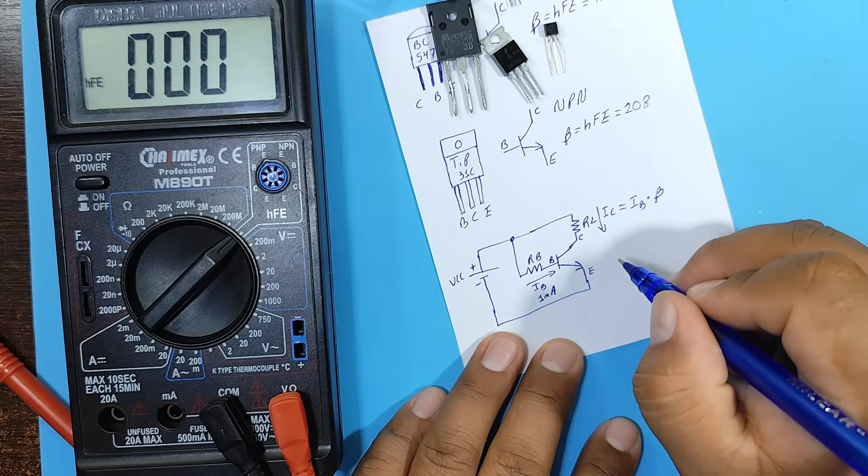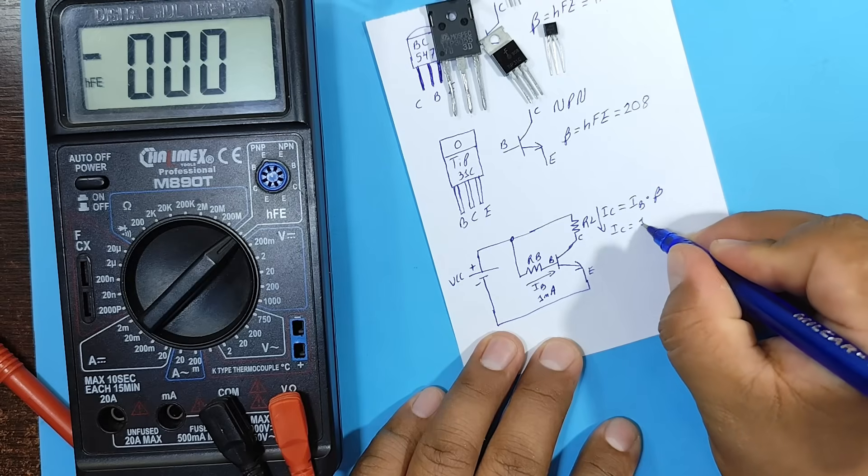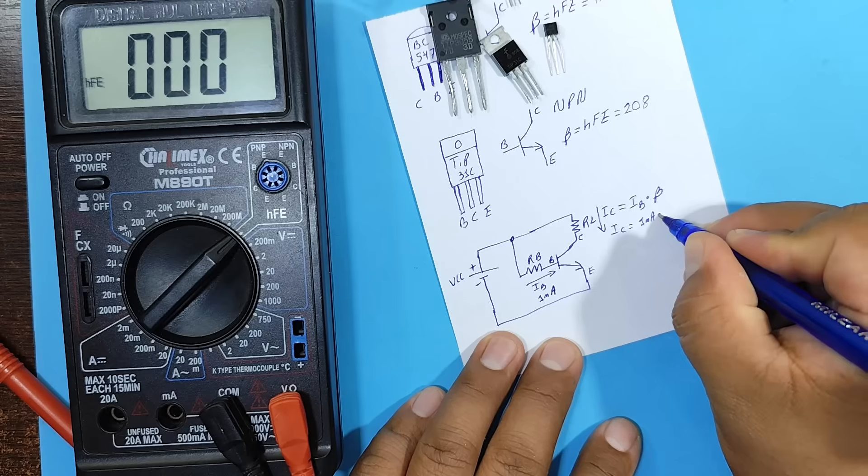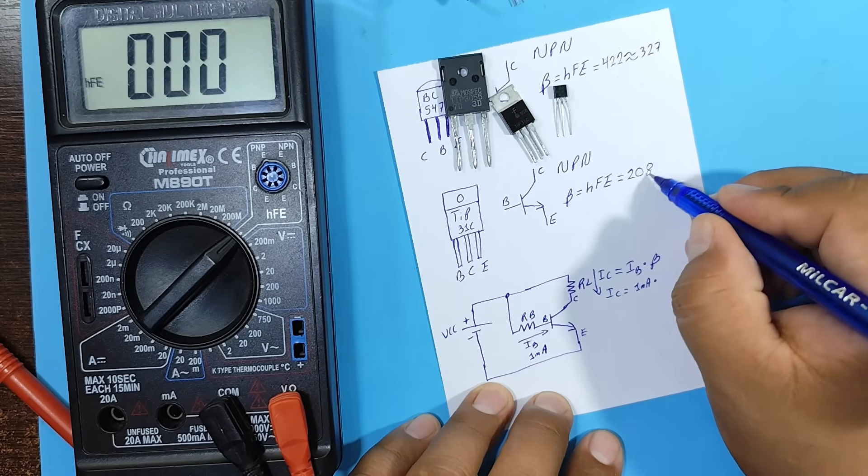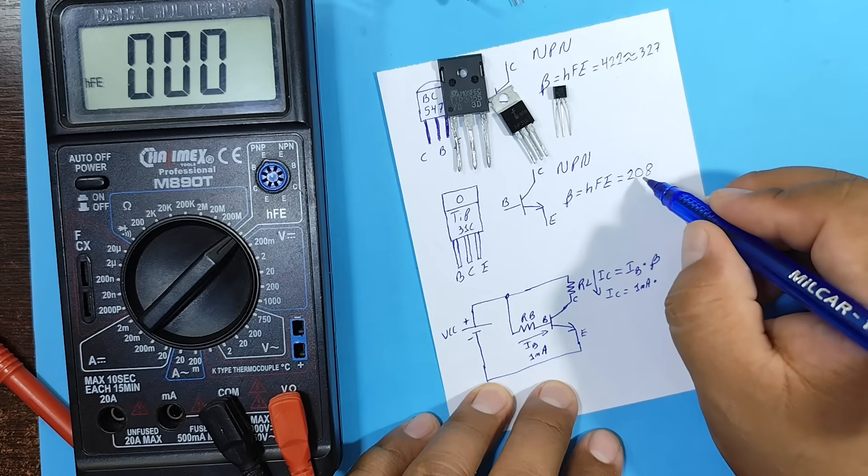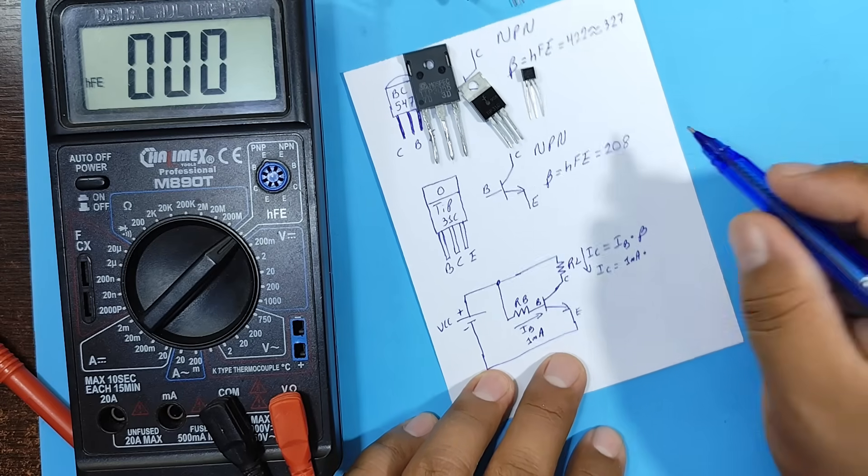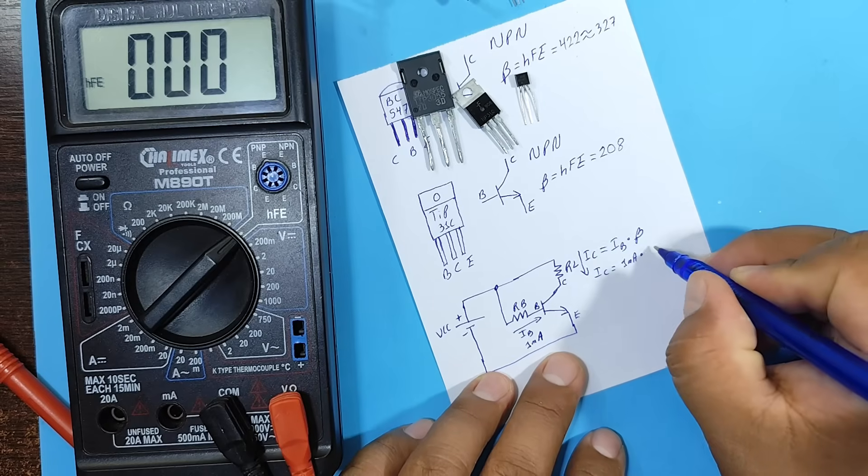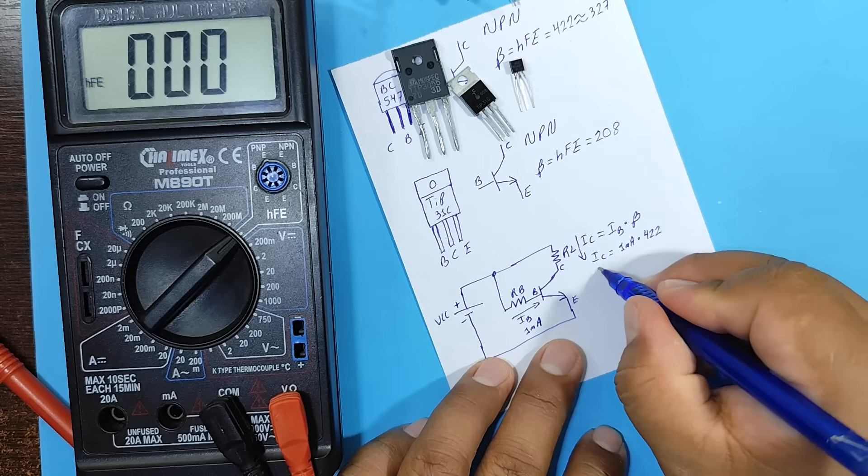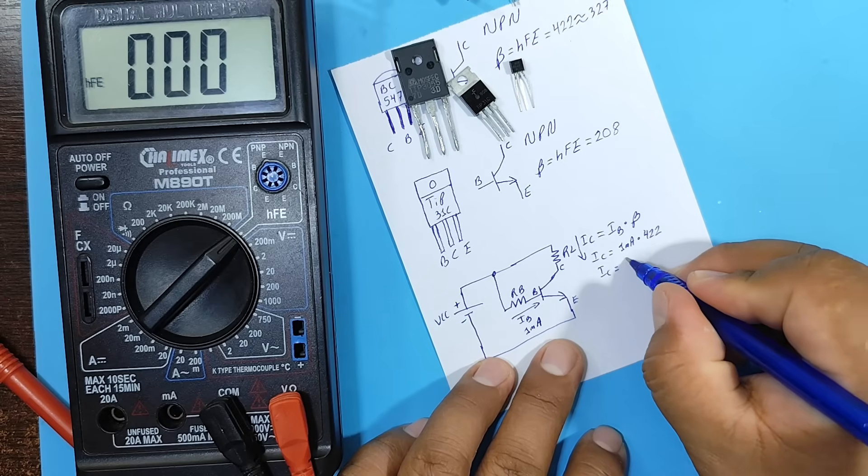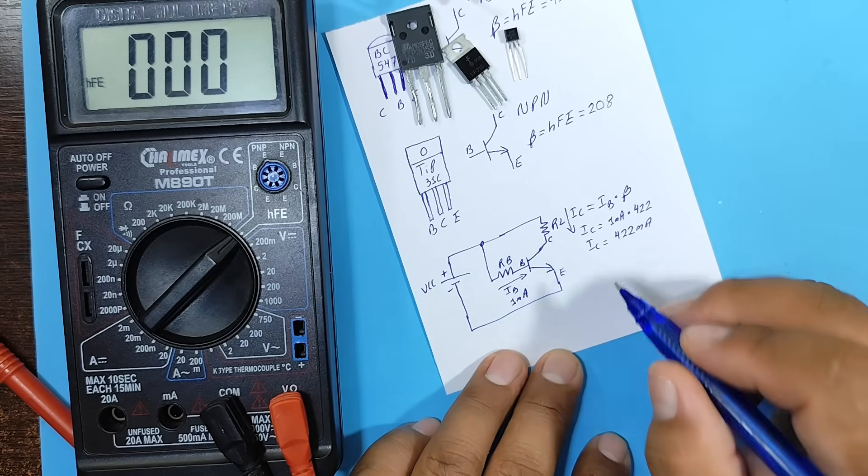That is, the collector current would be equal to, if the base current were 1 mA, it would be amplified by a gain factor. Let's say 208, or 422, or 327. Therefore, in the smallest transistors, for example the 422, our collector current could reach up to 422 mA. That's the work done by the gain.